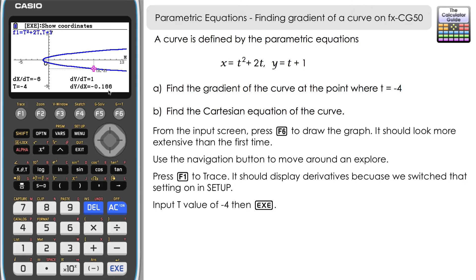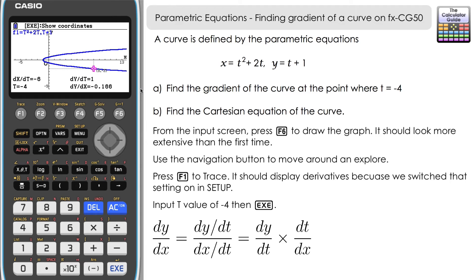That value of minus 0.166 references negative one sixth. dy/dx is found by dividing dy/dt by dx/dt: dy/dt is 1, dx/dt is minus 6, so dy/dx equals 1 divided by minus 6, which gives minus one sixth. That is our solution for part a.